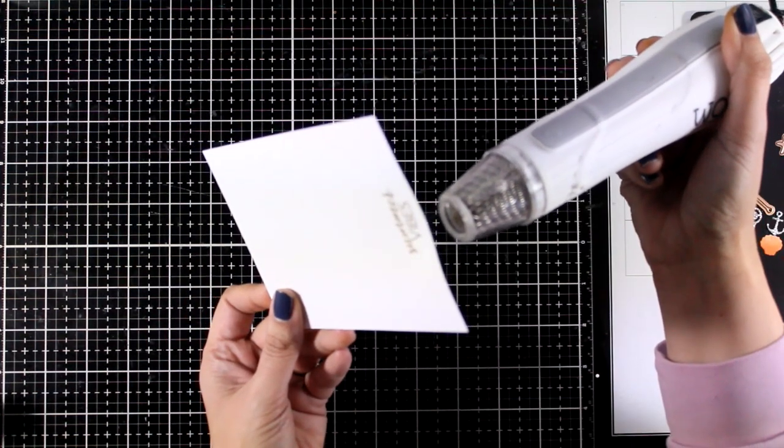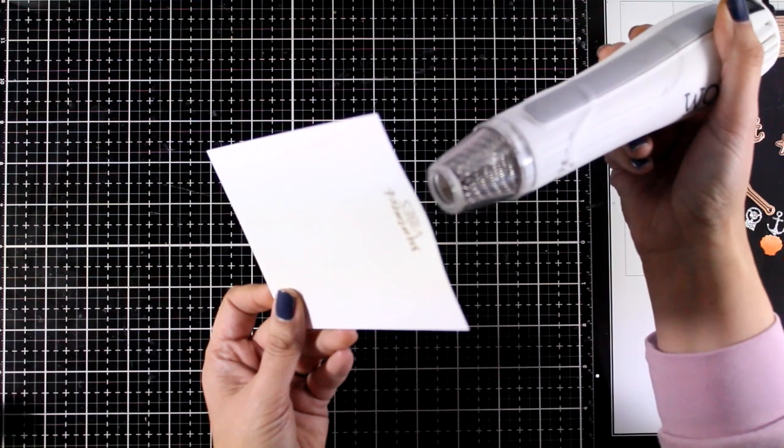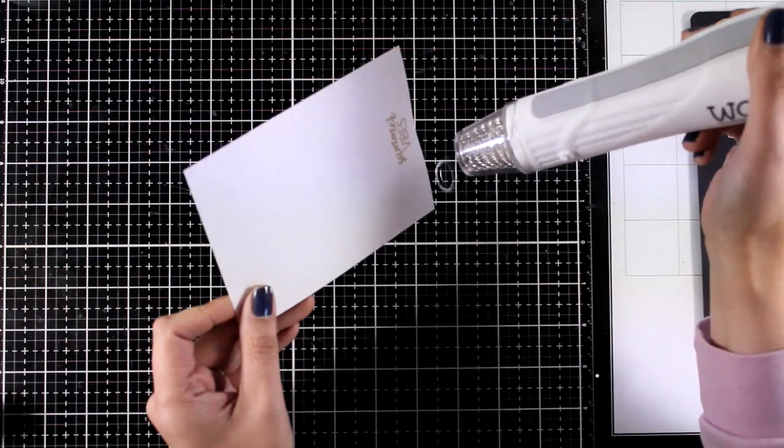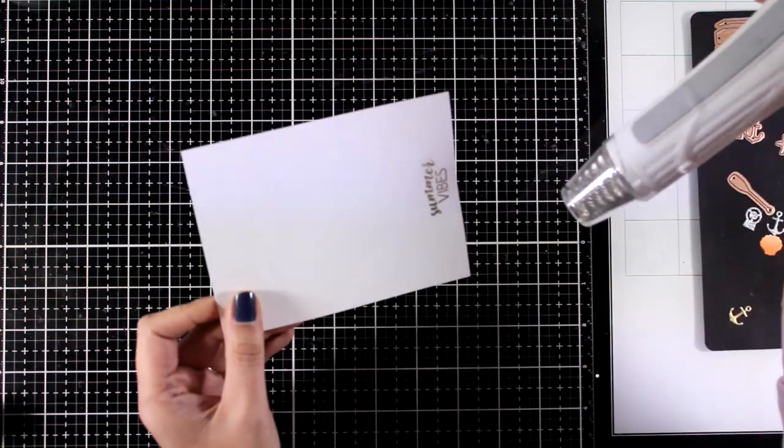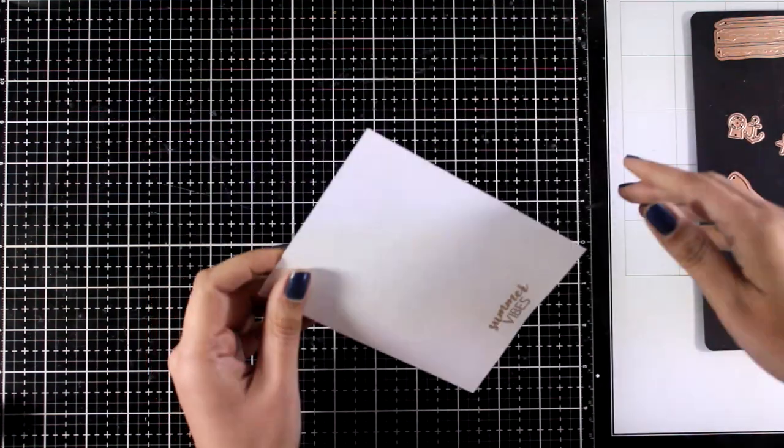I'm working on a solar white Neenah cardstock. The size of my panel is 4.25 by 5.5 but you will see that I'm going to cut it smaller later on.